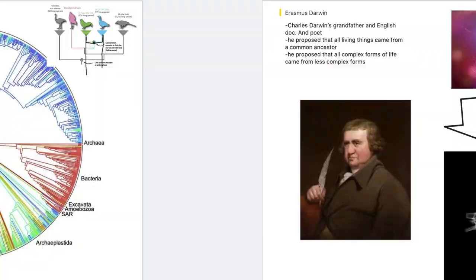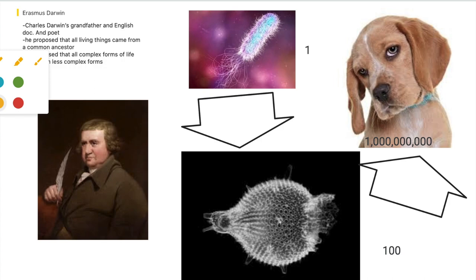Next, we're going to Erasmus Darwin. He is the grandfather of Charles Darwin. He was an English doctor and poet. He proposed that all living things came from a common ancestor as well. He also proposed that as life evolved, it got to more complex forms.